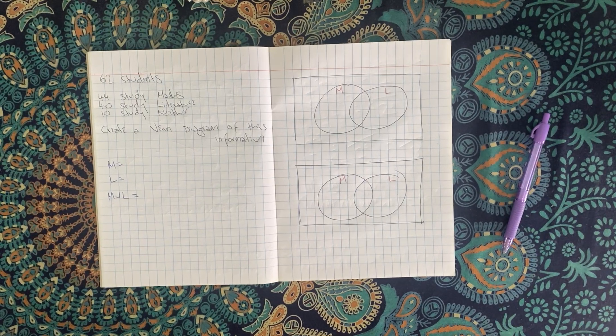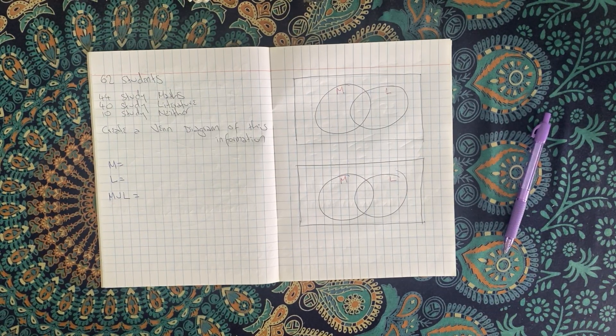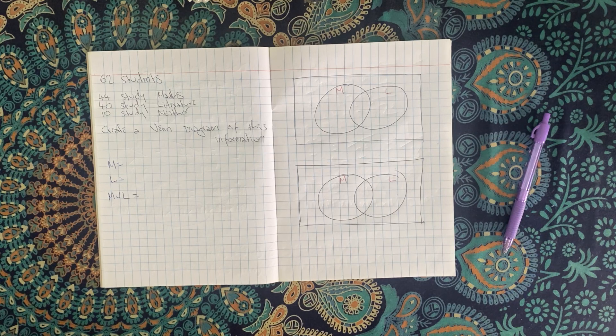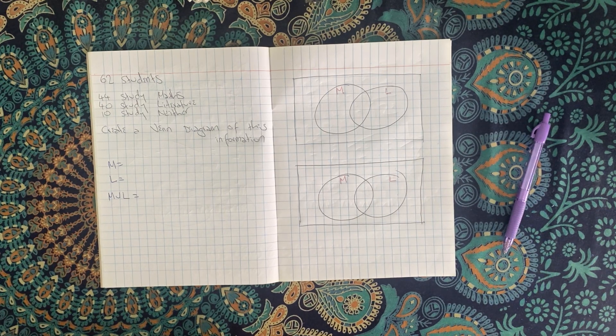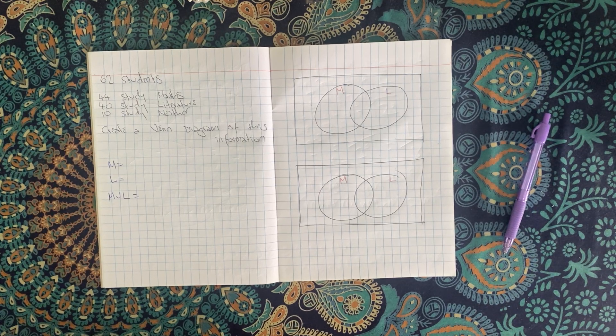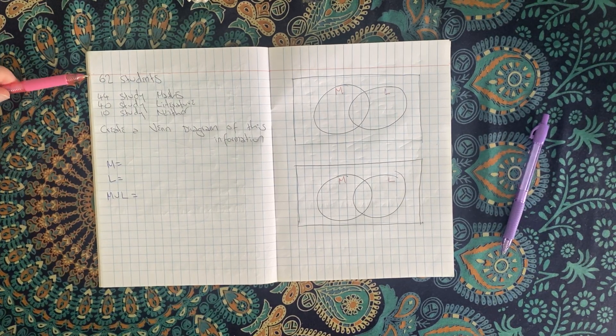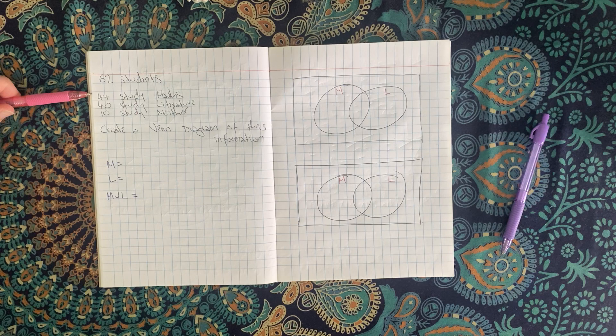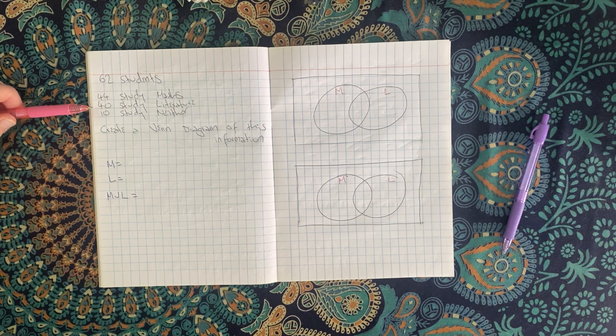We're going to do the last thing for this chapter on set notation and Venn diagrams. We're going to learn how to find intersections when we're not given the value. I've got some information here. I know that there are 62 students in the class. 44 study maths, 40 study literature, and 10 study neither.